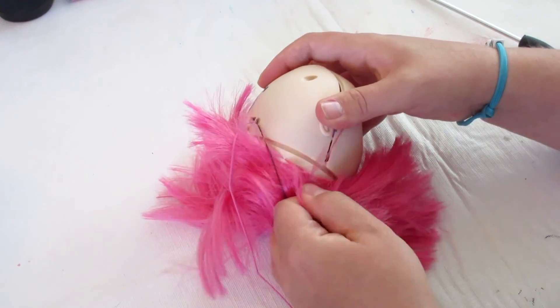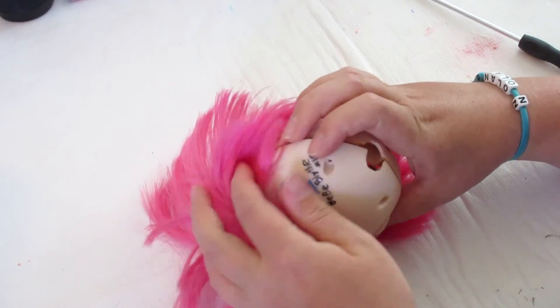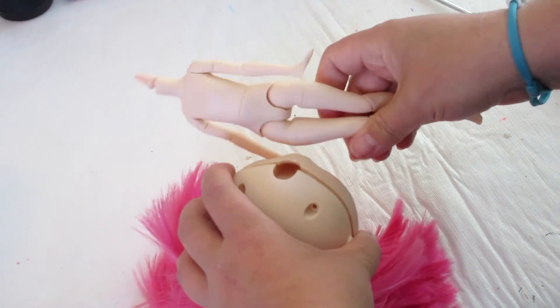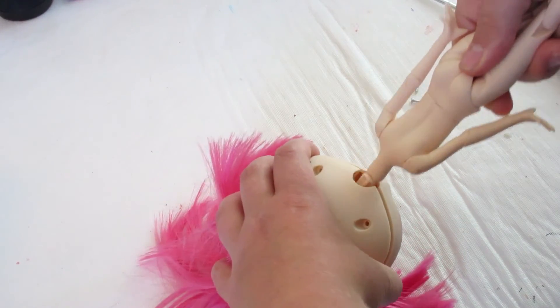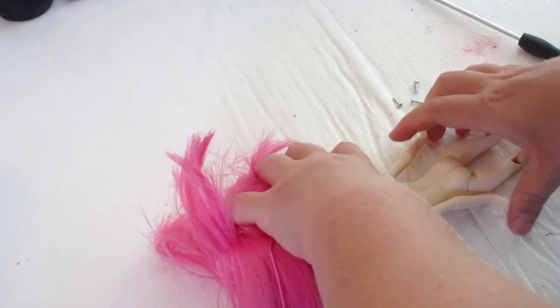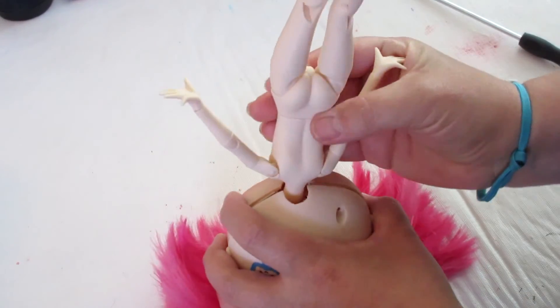I haven't actually prepared the body, so we're just going to put it in. I'm using a Pure Neemo extra small. I haven't put the rubber band on it yet that I usually do, but we're just going to put it in there for now to see how the eyes work.